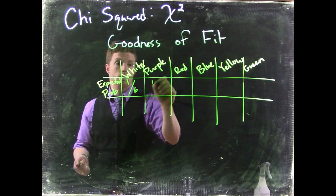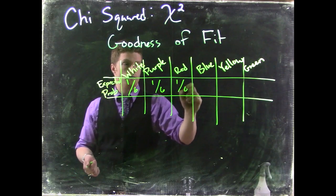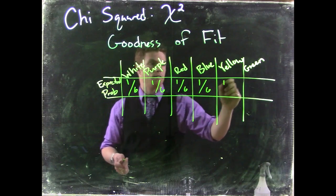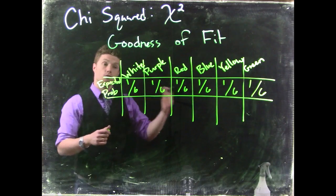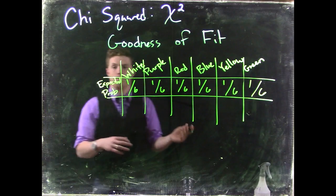This would be one-sixth for each outcome. This would be a uniform distribution if we had a fair dice.